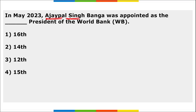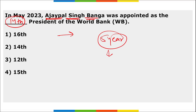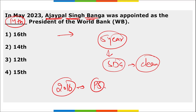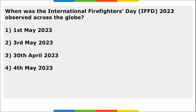Ajay Pal Singh Banga was appointed as the 14th president of the World Bank, nominated by US President Joe Biden. He will serve for five years, working towards sustainable development goals and environmental protection. He will be succeeding David Malpass. In 2016, Ajay Banga was also honored with the Padma Shri in trade and industry.